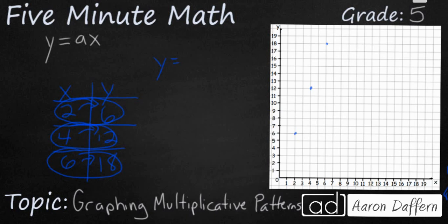And let's see if we can find a common number that we multiply our x by to get our y. 2 times 3 is going to be 6. So let's see if that works. 4 times 3 is 12. Yes, 6 times 3 is 18.